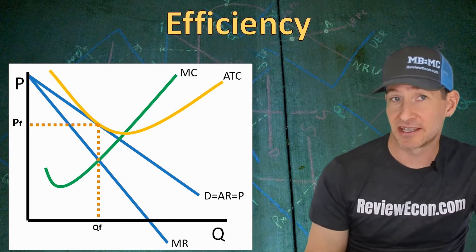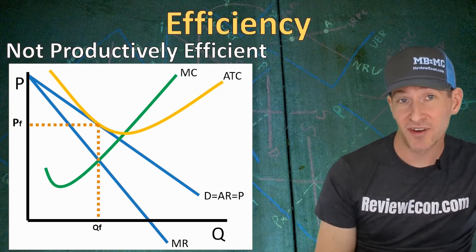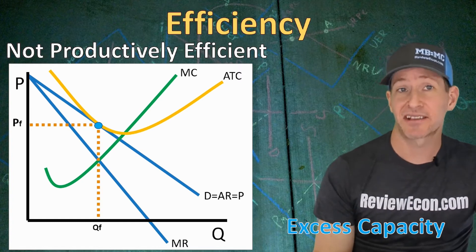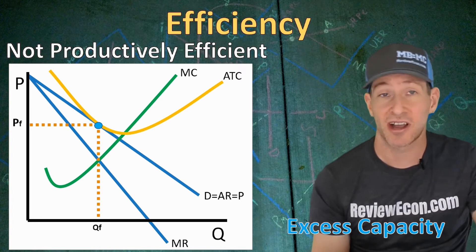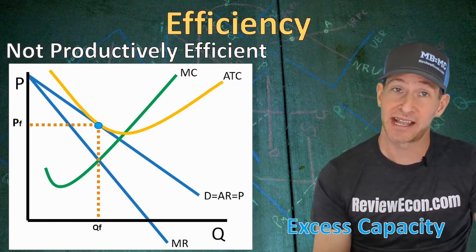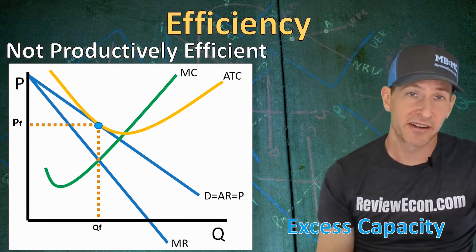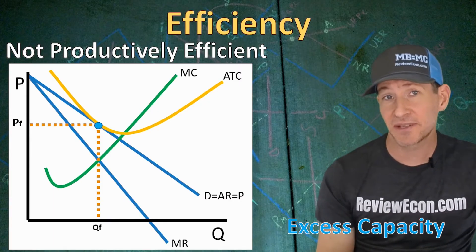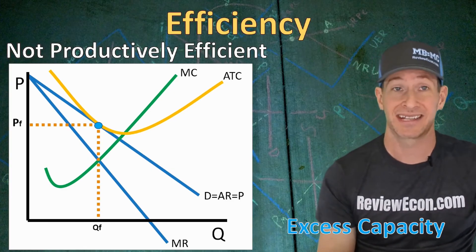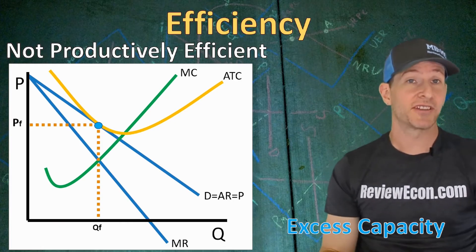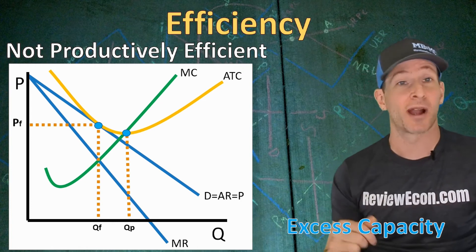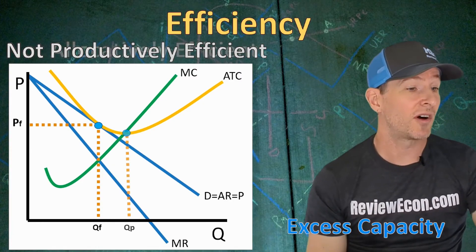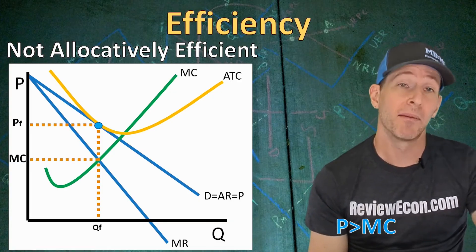Next we'll talk about the efficiency of monopolistically competitive markets. When it comes to productive efficiency, monopolistically competitive firms are not productively efficient because they produce on the downward sloping portion of the average total cost curve — this is called excess capacity. Essentially, firms can reduce the average cost of production by increasing production, because most monopolistically competitive firms have resources sitting idle. If this firm were productively efficient, it would produce at QP, found at the minimum of the ATC curve where ATC equals MC.